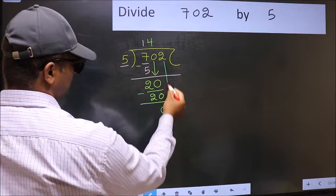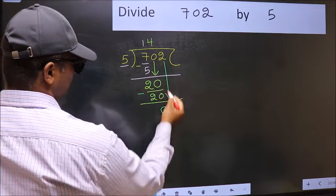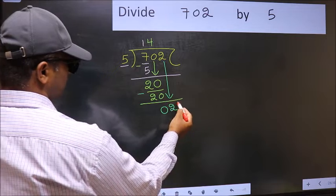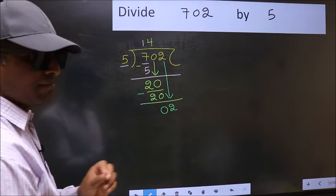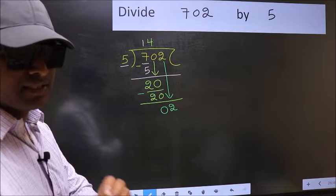After this, bring down the beside number. So 2 down. After this step, the mistake happens.